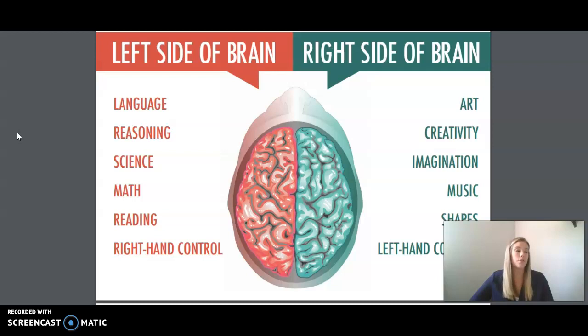Interestingly, the nerves that connect your cerebrum to the rest of your body cross over to the opposite side as they enter your brain. This means that each hemisphere largely controls the muscles of the opposite side of the body.